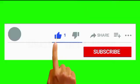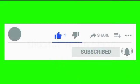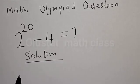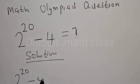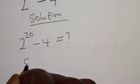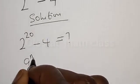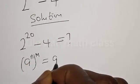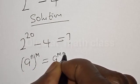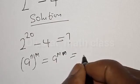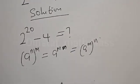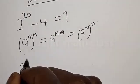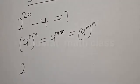Solution: we have the given equation 2 raised to power 20 minus 4. Remember, if you have a raised to power n raised to power m, that is the same thing as a raised to power mn, which is equal to a raised to power m raised to power n. Then the equation becomes 2 raised to power 2 raised to power 10.